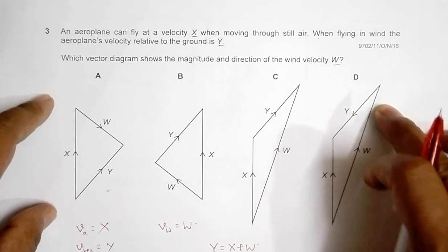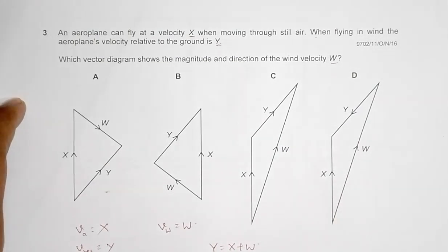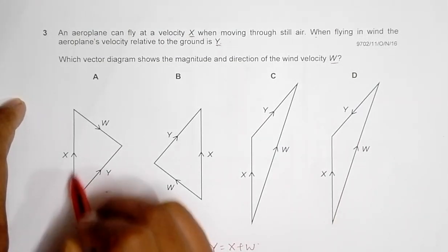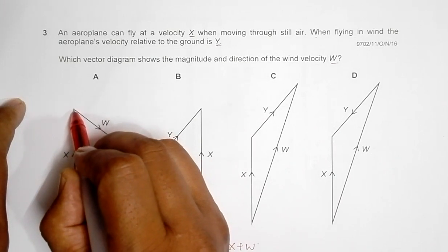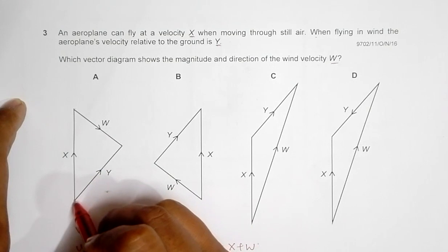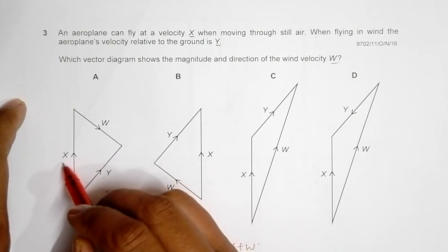If I go through the vector diagrams, let's see. First we have x, from the tip of x we have w here. So the vector from here ends here and this is what we have y here. So y seems to be the resultant of x and w.